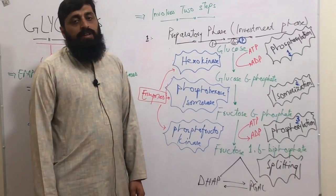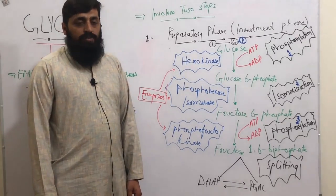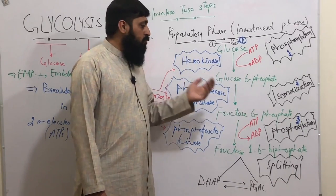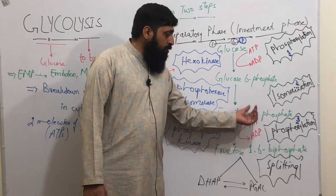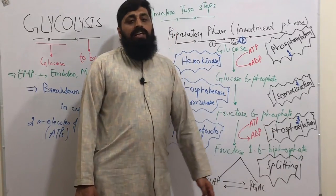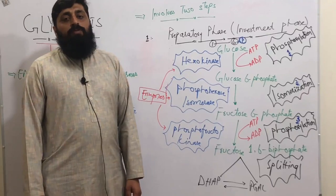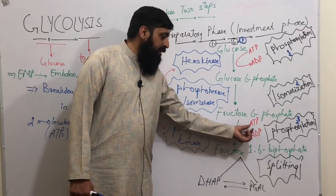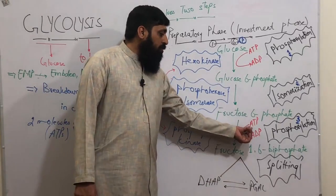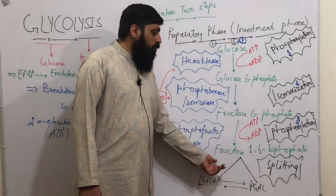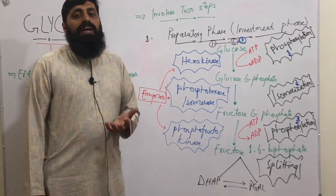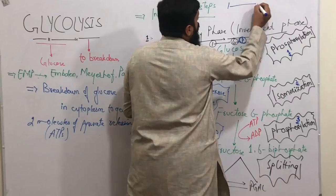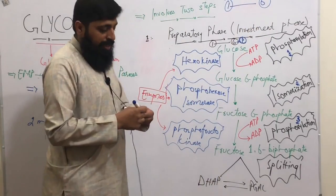The molecular formula remains the same, only the structure changes — one is a pyranose ring and the other is furanose. After fructose-6-phosphate, the third step is again phosphorylation — addition of phosphate. That phosphate comes again from the energy currency of the cell, ATP, which supplies phosphate to be added to fructose. The sixth end of fructose already has a phosphate attached, but the one end (carbon one) is still free.